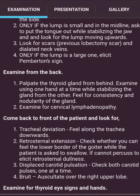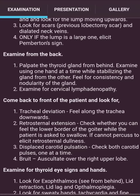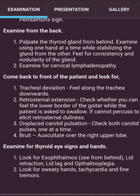Then examine from behind: palpate the thyroid from behind using one hand at a time while stabilizing the gland with the other. Feel for consistency and nodularity of the gland. Examine for cervical lymphadenopathy. Come back to the front, look for tracheal deviation, and feel along the trachea downward for retrosternal extension — check whether you can feel the lower part of the goiter while the patient swallows.